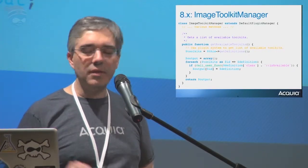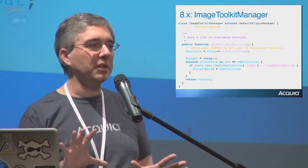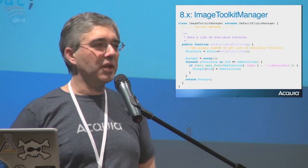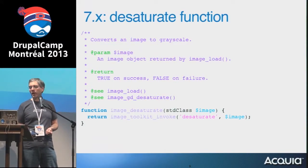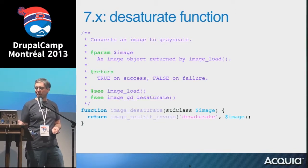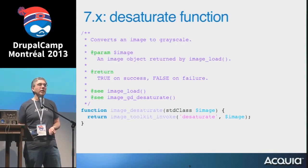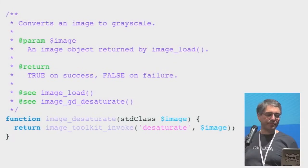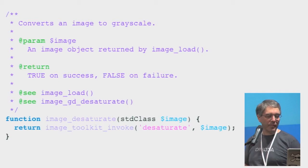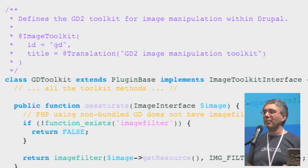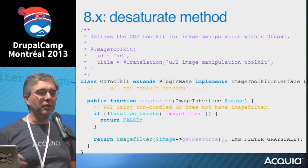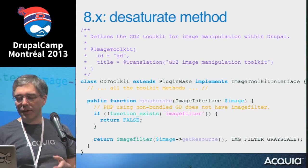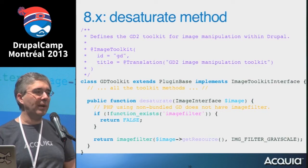In Drupal 7, if I wanted to convert an image to grayscale, I'd call image_desaturate, which would then use another layer of indirection — image_toolkit_invoke — to look up which image toolkit to use and pass the data through. In Drupal 8, because we have the plugin specifically mapping to GD, we can put the implementation directly there — actually one fewer layer of indirection. We're calling out to the underlying GD function image_filter directly. The mapping is one-to-one between these class methods in Drupal 8 and the bare functions in Drupal 7, just organized in a different place.